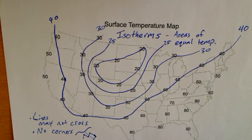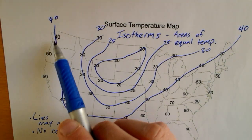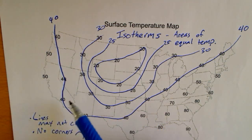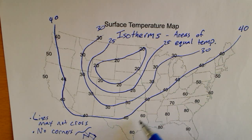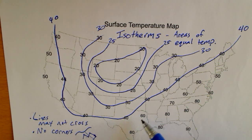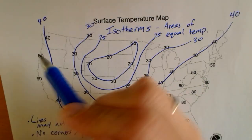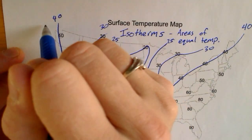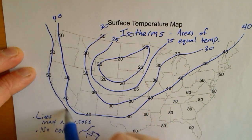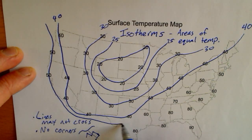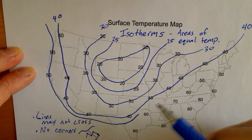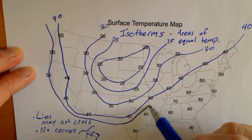Now we're going to connect the 50s, and here's where it gets a little more challenging. We've got a 40, and we see a 50 to the left. So we're going to presume it's 50 down here in the Pacific and Mexico, and 50 here. But look, here's a 60 — so the 50 line has to be between the 40 and the 60. It's going to get kind of close; it has to be in between that 40 and 60.